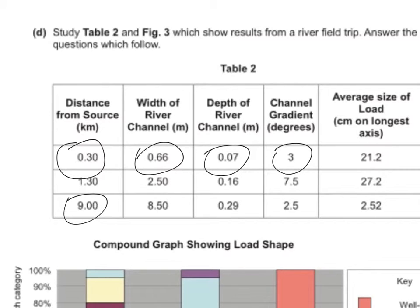Nine kilometers from the source, the width of the river has increased to 8.5 meters. The depth has increased to 0.29 meters. And the channel gradient has decreased to 2.5 degrees. That should be enough to get full marks on this question.